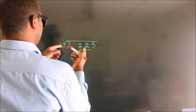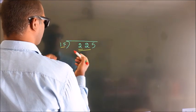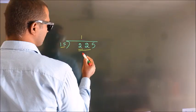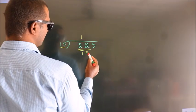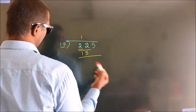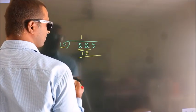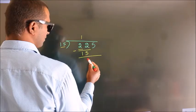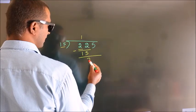In the 15 times table, 15 once is 15. Now we should subtract, and we get 7.